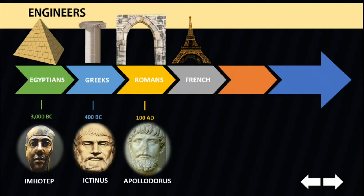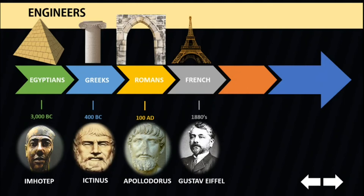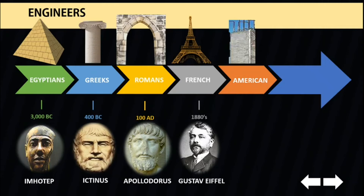Later on, steels with high tensile and compressive strengths evolved the construction industry toward taller structures and eventually to the skyscrapers of today. Gustave Eiffel is a famous French engineer who constructed many long-span steel bridges in addition to his iconic Eiffel Tower, which became a worldwide-known landmark for Paris. With the steel industry booming, the combination of steel reinforcement and concrete enabled American engineers to convert the brittle stone-like material into tough, ductile structural members.